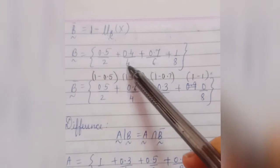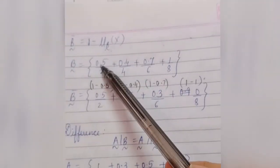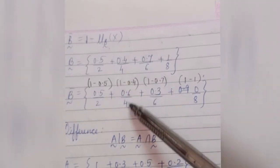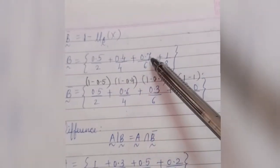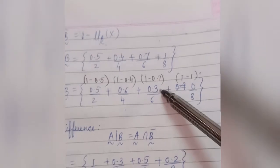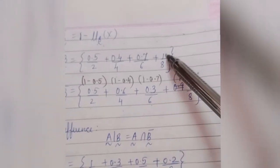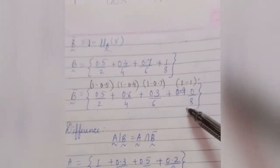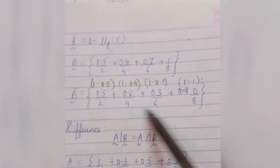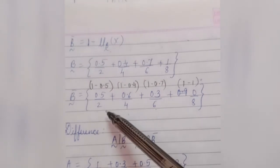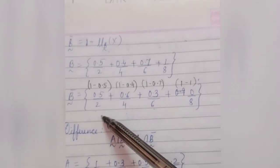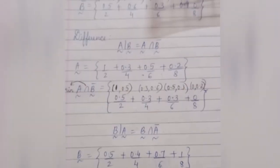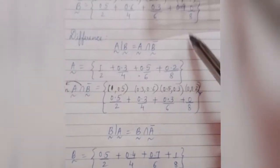For complement of B: 1 minus 0.5 is 0.5 upon 2, 1 minus 0.4 is 0.6 upon 4, 1 minus 0.7 is 0.3 upon 6, and 1 minus 1 is 0 upon 8. This is the B complement set. We now have both A complement and B complement needed for the difference operation.